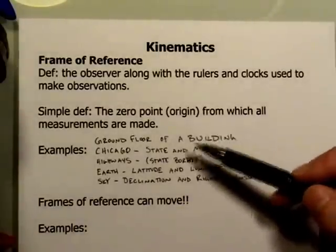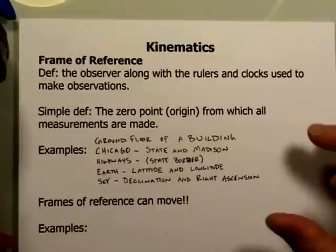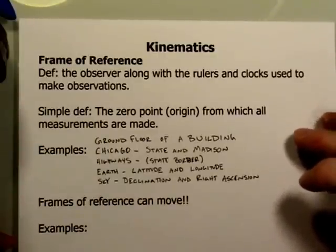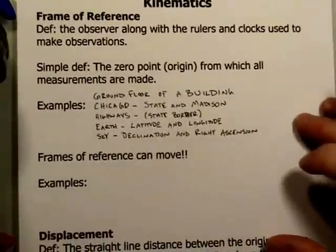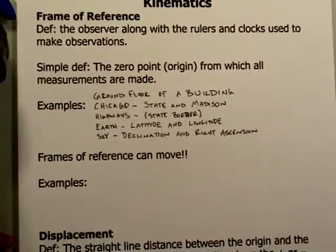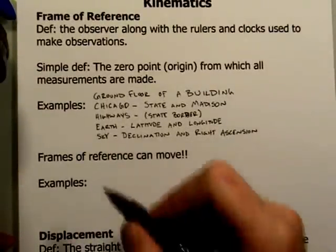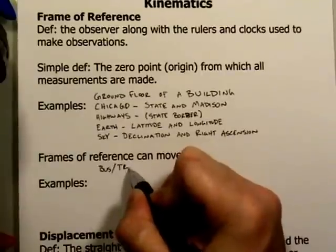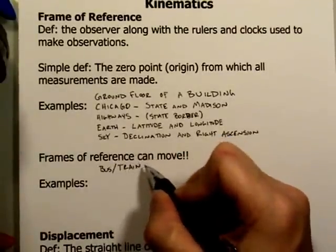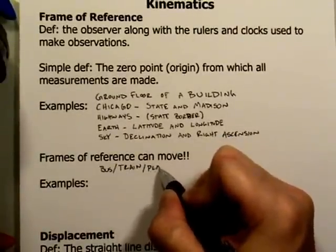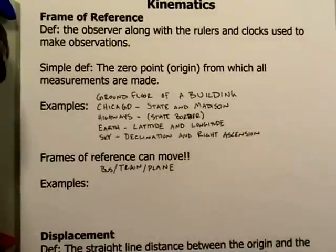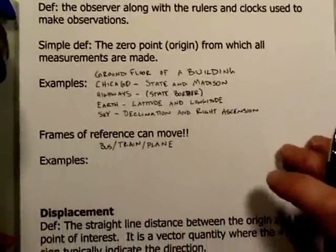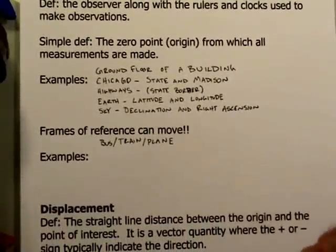Each of these systems refers to some point from which measurements are made — whether an address in Chicago, a location on Earth measured from Greenwich and the equator, or a point in the sky. The tricky thing about frames of reference is that they can actually move. For example, if you're inside a bus, train, or plane, you can move inside of those, so you are moving relative to them.